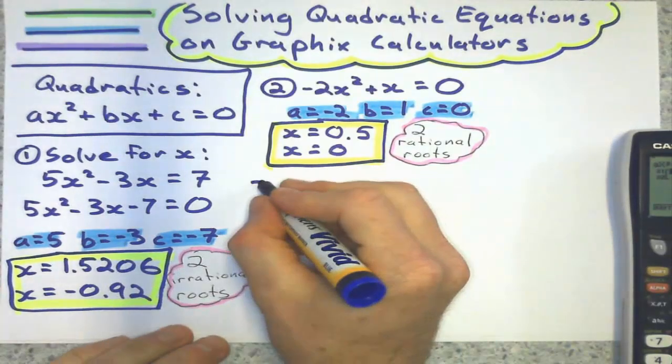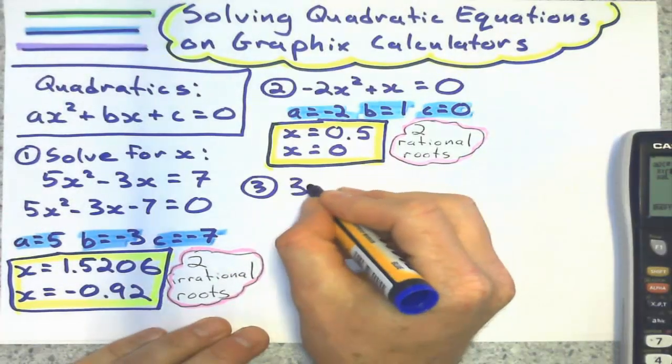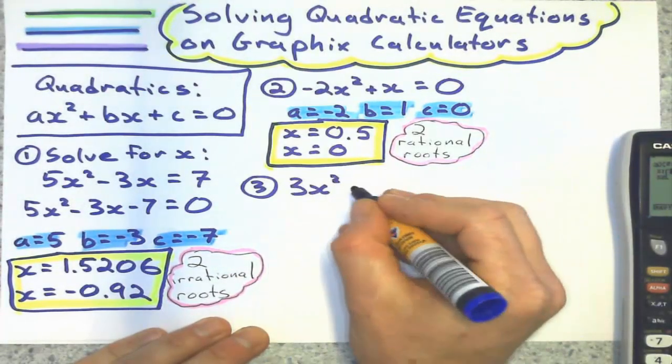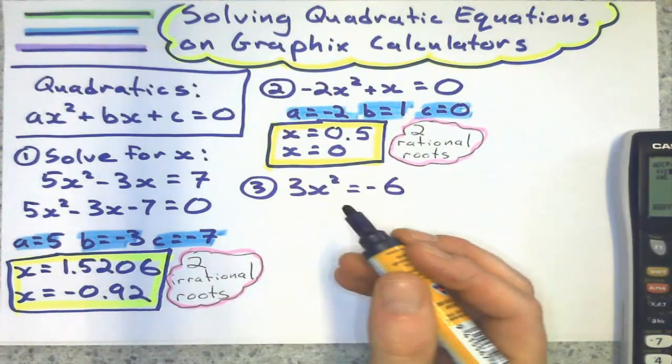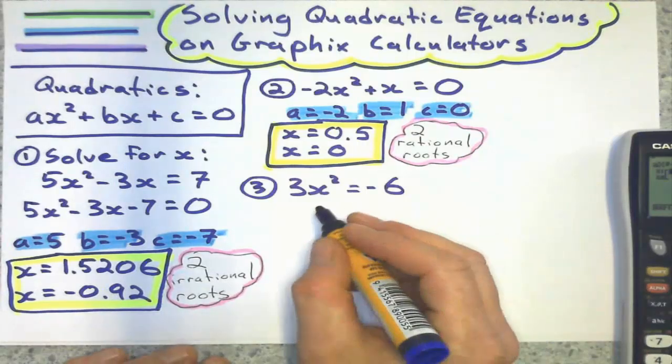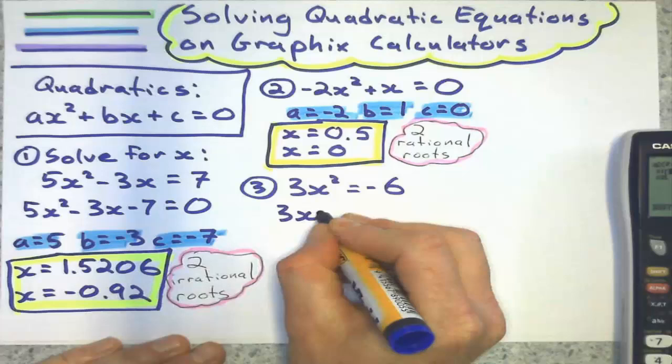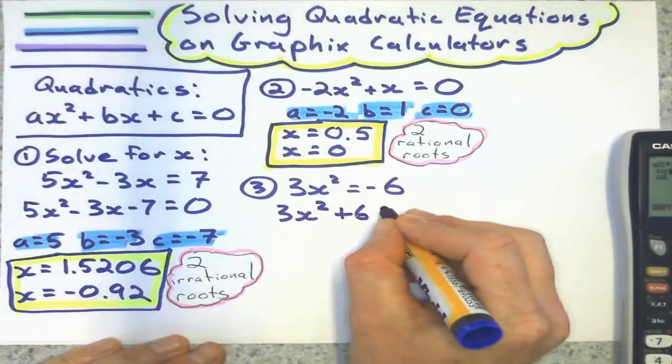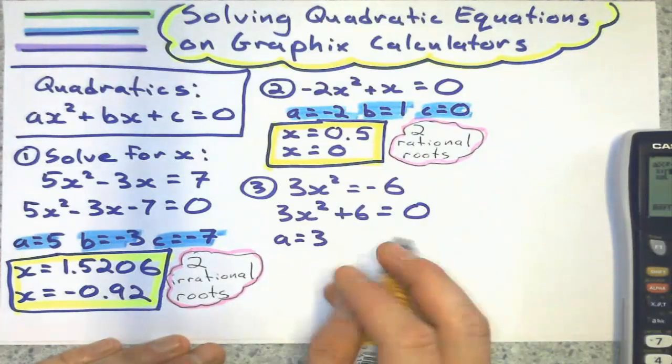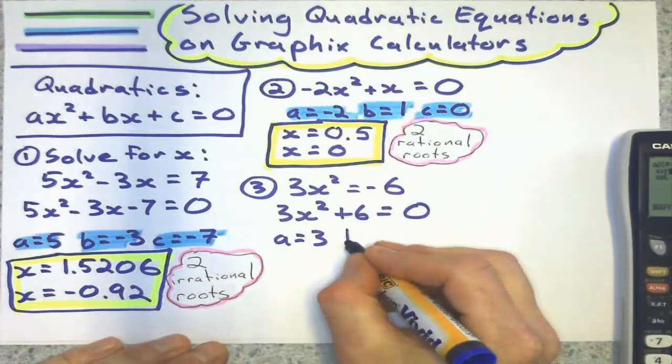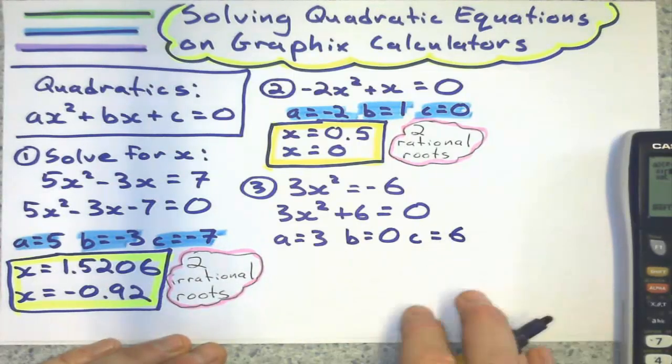So in this last example, let's see, this last example, your calculator is going to tell you something. If I have 3x² equals negative 6, and if you're good at solving quadratics right now, you may already see something. So we still follow the same rule. Set it equal to 0. That's 3x² plus 6 equals 0. A is 3. There is no B term. So B is, in fact, 0. And C is 6.